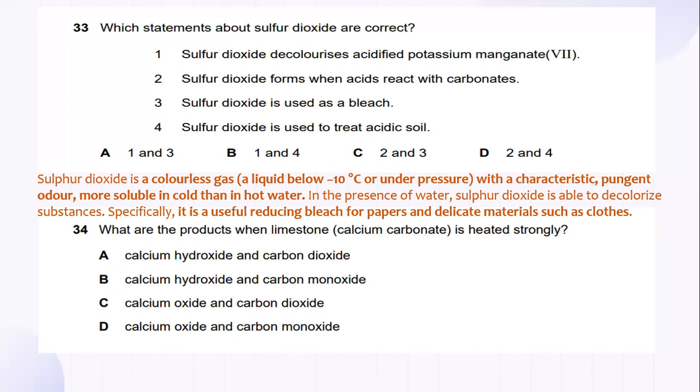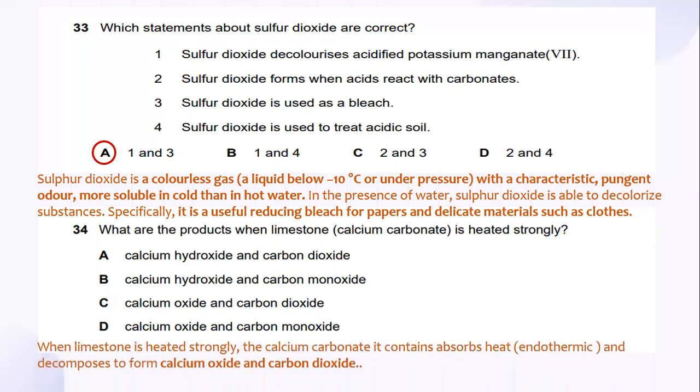And also, one entry, sulfur dioxide decolorizes acidified potassium manganate(VII). So, the answer is A. And what are the products when limestone or calcium carbonate is heated strongly? When limestone is heated strongly, the calcium carbonate it contains absorbs heat endothermic and decomposes to form calcium oxide and carbon dioxide. So, the answer is C.